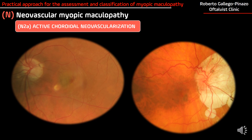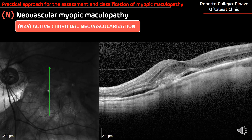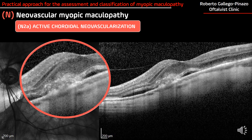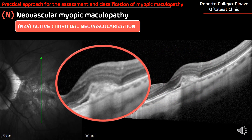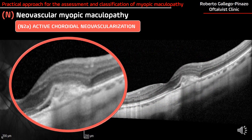Stage N2A is for active choroidal neovascularization, which can be easily identified in the fundus examination, but OCT plays a key role in the detection of such lesions. Myopic patients develop type 2 neovascular lesions, which grow on top of the RPE — which is eroded — and through that erosion the fibrovascular lesion grows within the subretinal space. Here we can see the disruption of the RPE and the fibrovascular lesion causing leakage in the parafovea.